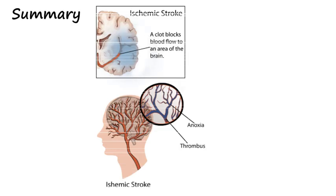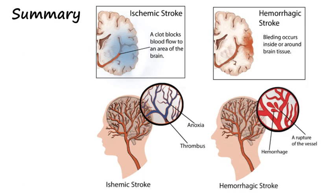In summary, an ischemic stroke involves a clot that blocks blood flow to an area of the brain. In contrast, hemorrhagic stroke occurs with a ruptured blood vessel that bleeds inside or around brain tissue.